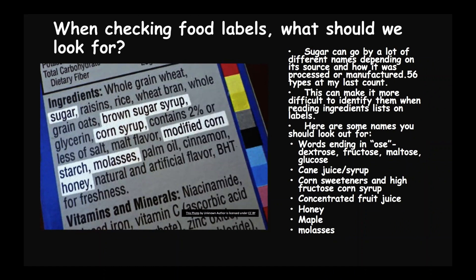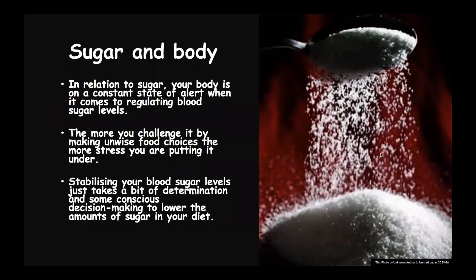Diabetes occurs when the body cannot use insulin properly or doesn't make enough insulin. In Type 1 diabetes, the body can't make insulin, so it must be injected to control blood glucose levels. Insulin resistance is when the cells in your muscles, fat and liver don't respond well to insulin and cannot easily take up glucose from the blood. In Type 2 diabetes, the body has become resistant to the effects of insulin; therefore, the body overproduces insulin to keep blood glucose levels normal. After many years of overproduction, the insulin-producing cells in your pancreas burn out. This can be helped with lifestyle changes.